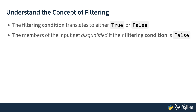To summarize what you've learned so far: a filtering condition is a statement that evaluates to either true or false based on a given criterion. For example, the if statement 'if number is bigger than zero' is a filtering condition. The members of the input get disqualified if their filtering condition is false — for example, negative two, negative one, and zero got disqualified since their filtering condition evaluated as false. Congratulations! You now know the essence of filtering. In the next lesson, you'll explore how to use the filter function in Python to filter iterables.